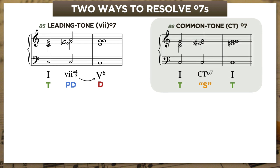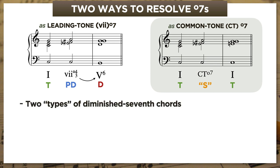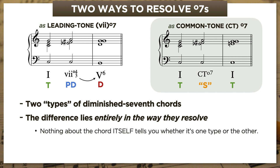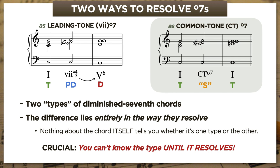In making these comparisons, it can be helpful to think of there being two types of diminished seventh chords — the common-tone type and the leading-tone type. But you have to understand — and this is crucial — the difference between these types lies entirely in the way they resolve. There's nothing about any particular diminished seventh chord, in and of itself, that tells you whether it's one type or the other. In other words, you can't know the type until it resolves.